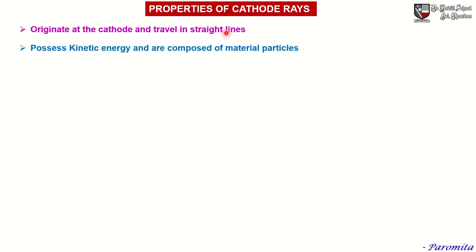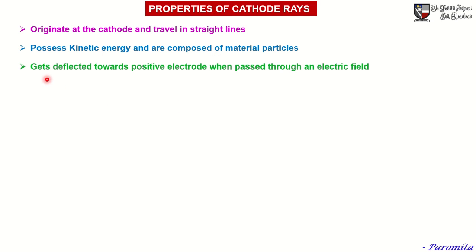Cathode rays possess kinetic energy and are composed of material particles. When a small paddle wheel is placed in the path of the cathode rays, the wheel starts rotating. This mechanical motion of the paddle wheel is possible only when these rays possess kinetic energy and are composed of material particles.